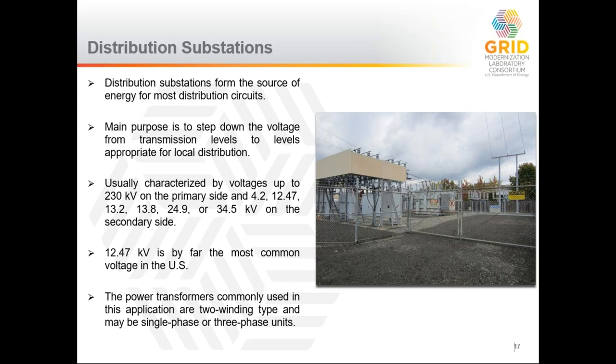Once you pick a distribution voltage, all of the distribution system equipment uses that voltage, so changing it over time requires changing out all of the equipment — a very expensive and time-consuming process. For example, Seattle historically had a legacy 4.2 kV system, which required many substations, but they switched to a 26 kV system. That changeover has taken well over 20 years because of the life cycle of equipment, so the voltage selection is a very important aspect.